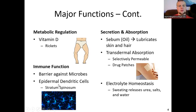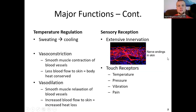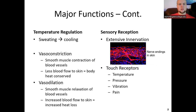We have immune functionality through epidermal dendritic cells that exist in the epidermal region and digest microbes as they try to enter the skin. For temperature regulation, we can do vasodilation — enlargement of blood vessels — where smooth muscle relaxes, allowing blood to move closer to the surface of the body and release heat.